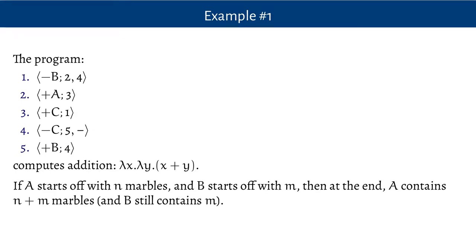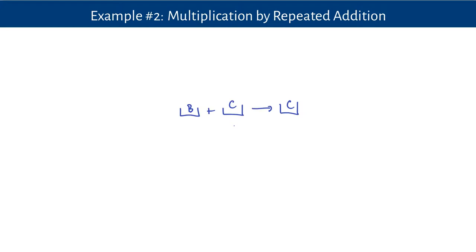This program computes the addition function lambda X, lambda Y, X plus Y, because if it starts with N marbles in register A and register B has M marbles, then at the end A contains N plus M. Now we can use those instructions as part of a larger program to compute multiplication by using repeated addition. We'll move things around so that instead of adding A and B and putting the result in A, we'll add B and C and put the result in C. As before, B is the register that is preserved.